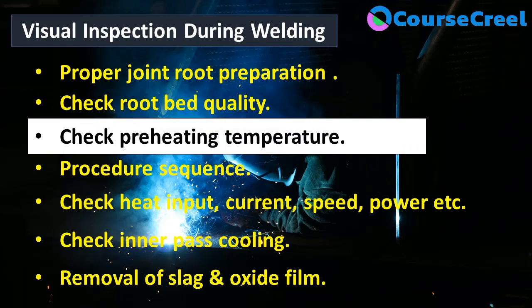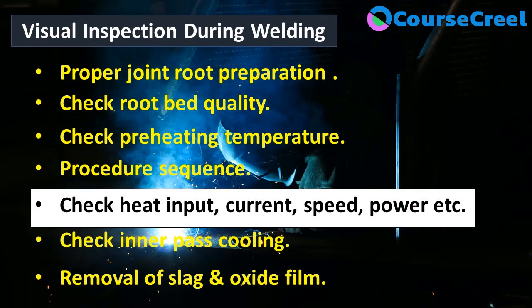If preheating is required, we need to check the temperature as well as the temperature of the inter-pass. Abnormal temperature can cause shrinkage and other types of defects, so corrective action must be planned accordingly. Also, parameters like heat input, voltage, current, welding speed, and power source must be checked during the welding process.